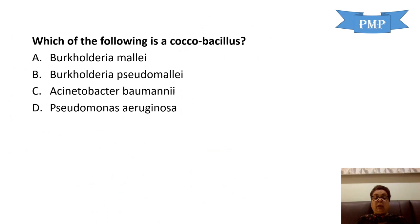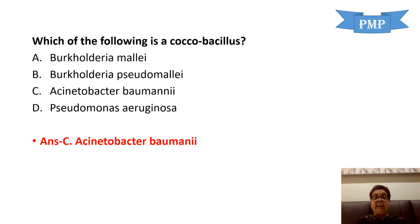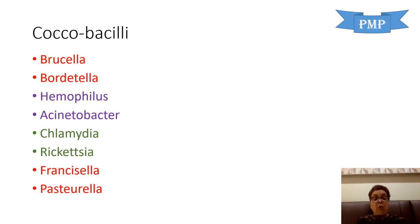Next question: which of the following is a coccobacillus? Options: Burkholderia mallei, Burkholderia pseudomallei, Acinetobacter baumannii, and Pseudomonas aeruginosa. The answer is Acinetobacter. Important coccobacilli causing human disease — also called pleomorphic bacilli — are all gram-negatives. These include Brucella, Bordetella, Haemophilus, Acinetobacter, Chlamydia, Rickettsia, Francisella, and Pasteurella. You can remember them as pairs.